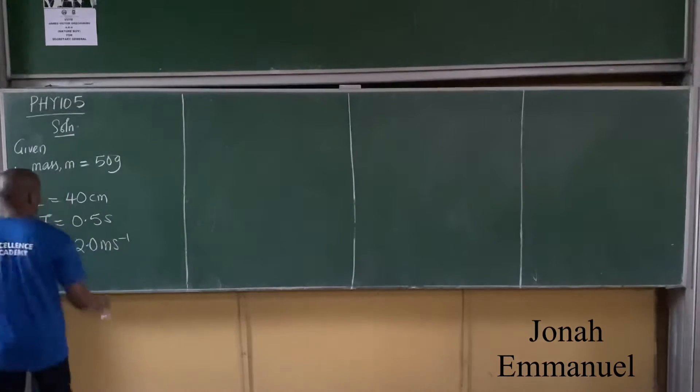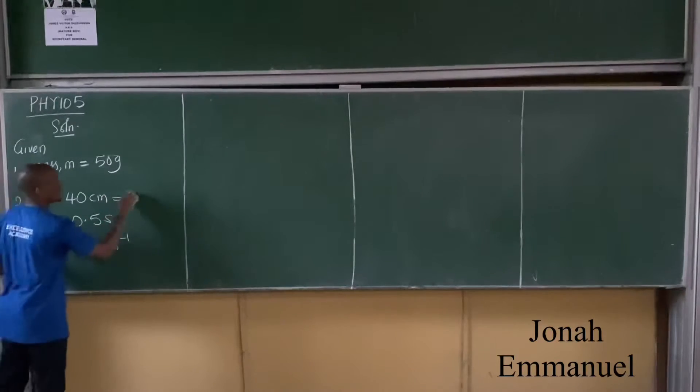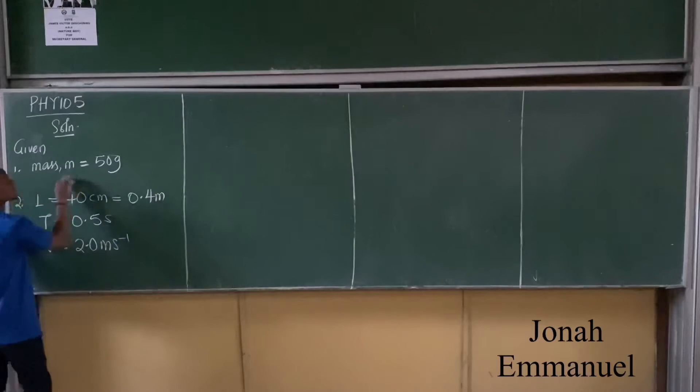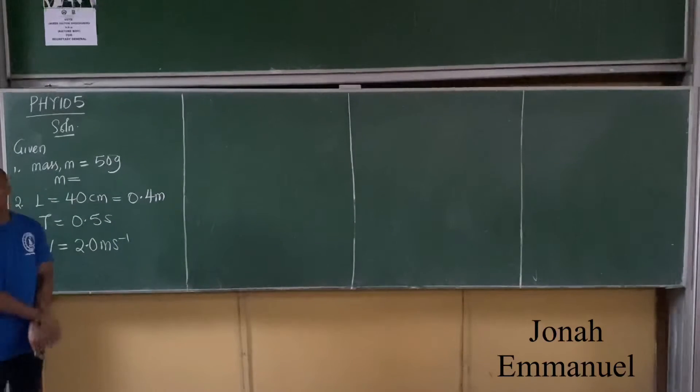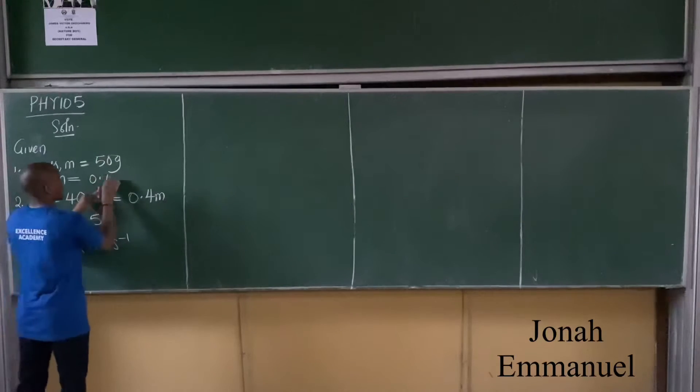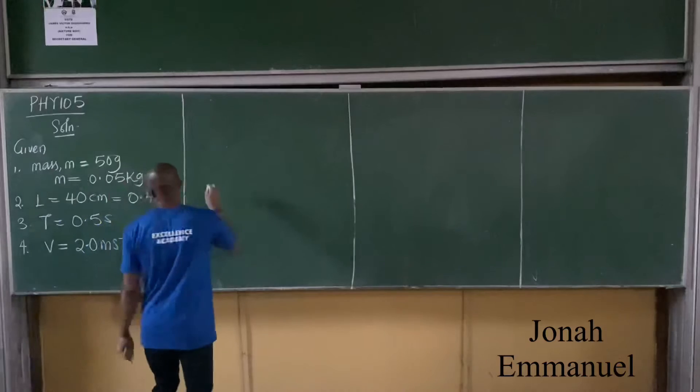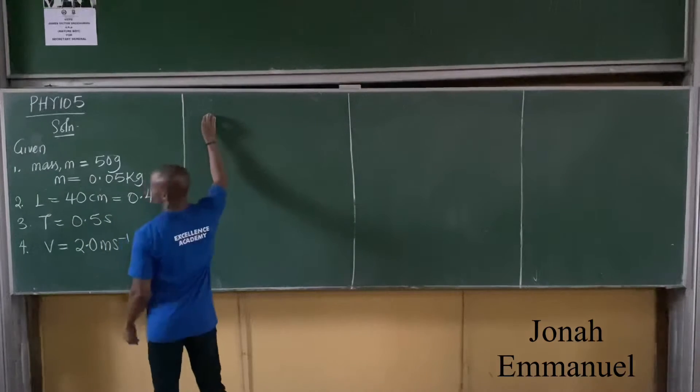First of all, do conversion. Convert this to meters, divide by 100, gives you 0.4 meter. Please convert this to kilogram. What do you get? Divide by 1000, 0.05 kg. So we have to find the angle.